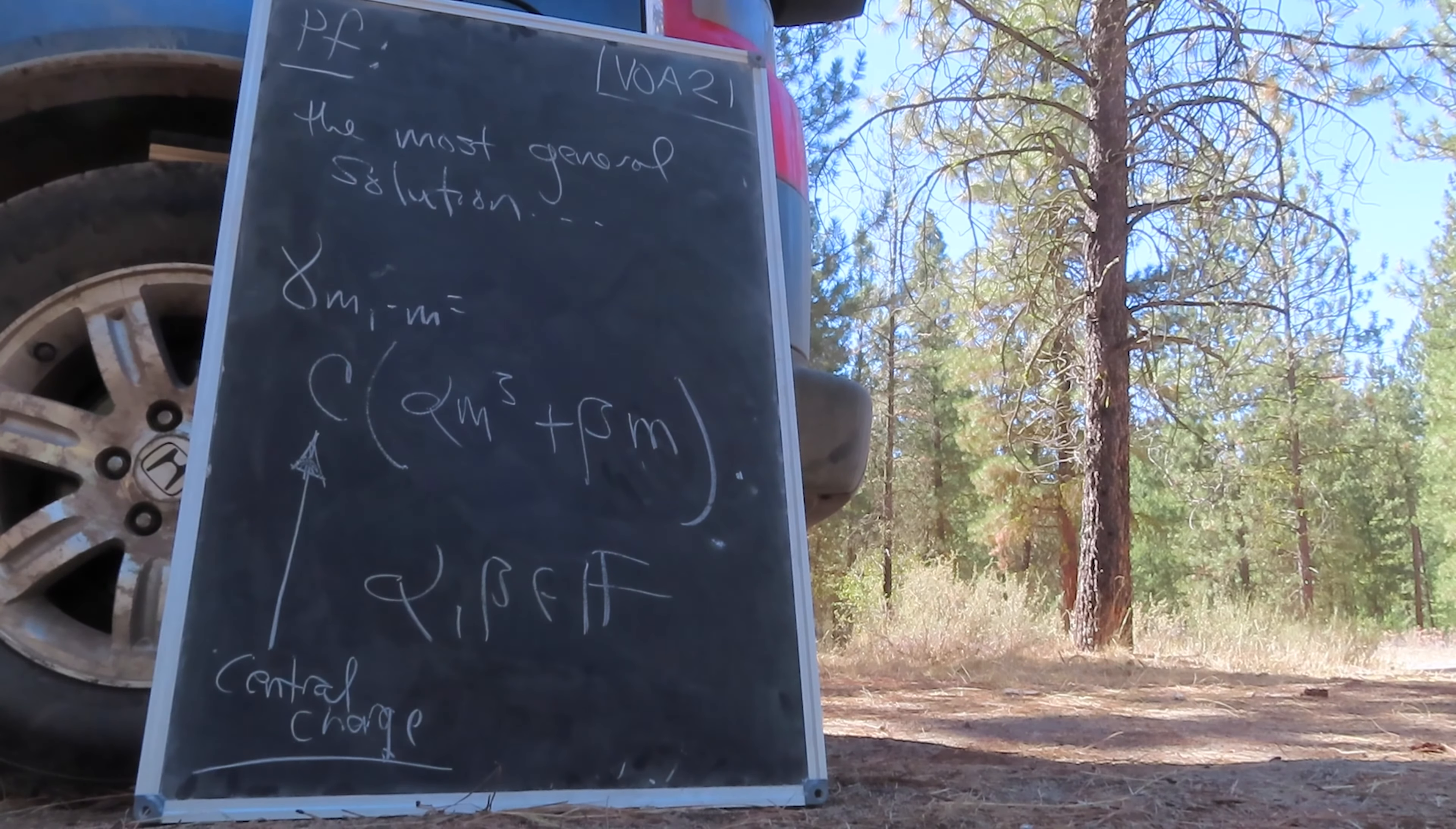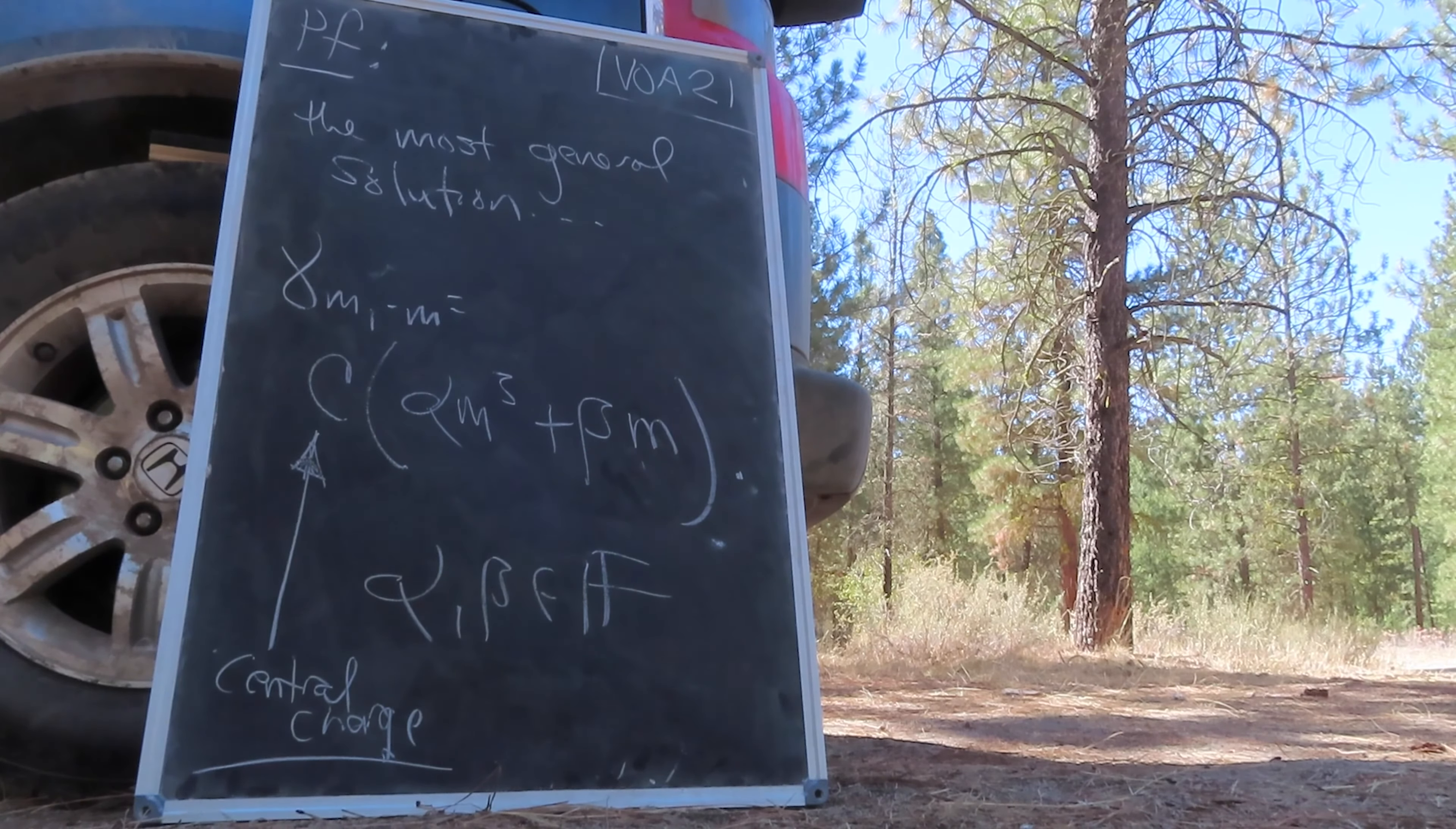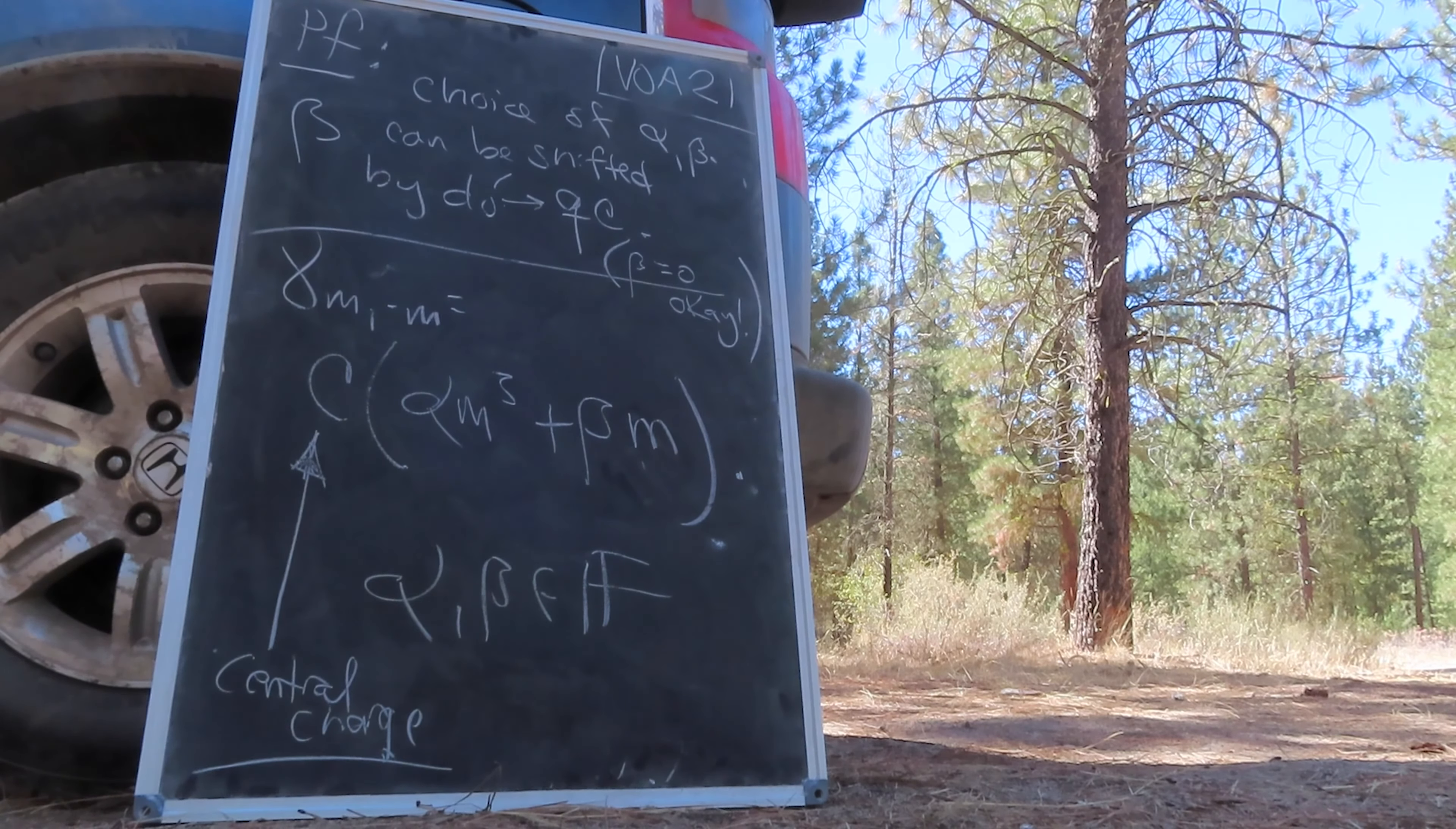Note that we have factored out the central charge c, which we are at liberty to do by a suitable redefinition of alpha and beta. Notice, of course, that we can adjust beta by shifting the operator d0 as before. Potentially, we can shift beta completely to zero. So the choice of beta is essentially a choice of convention.